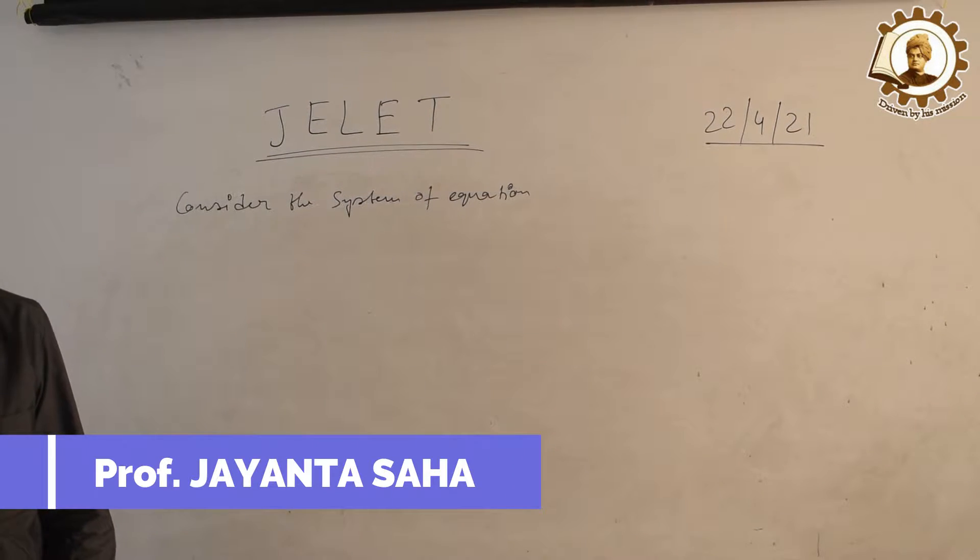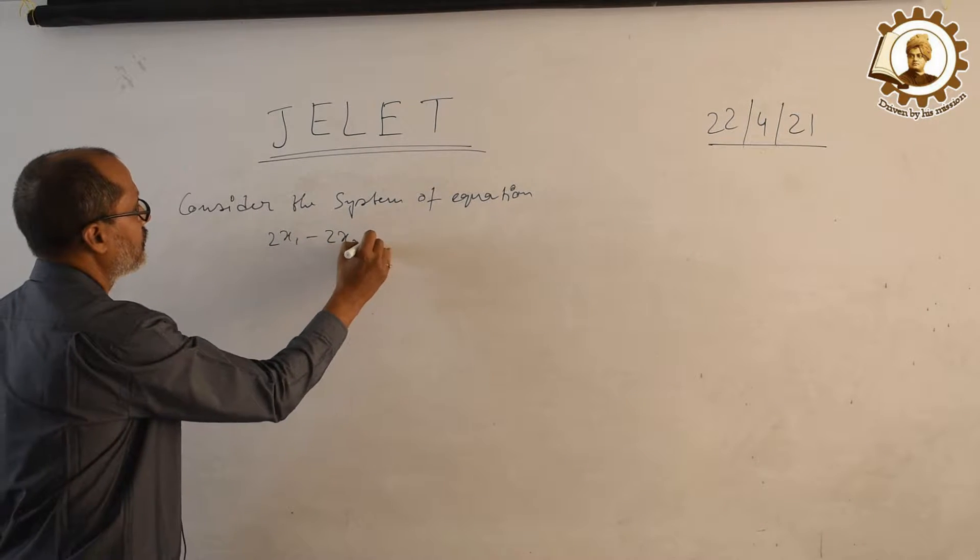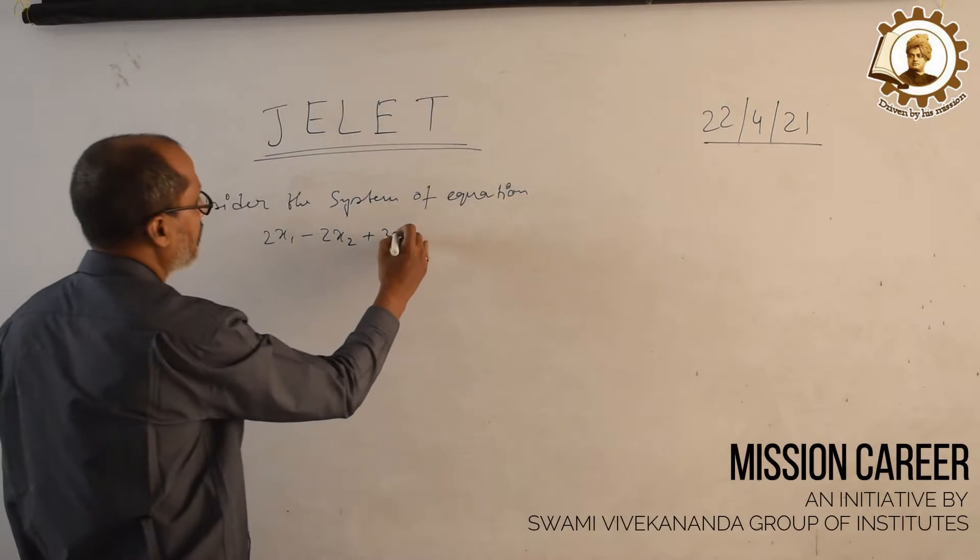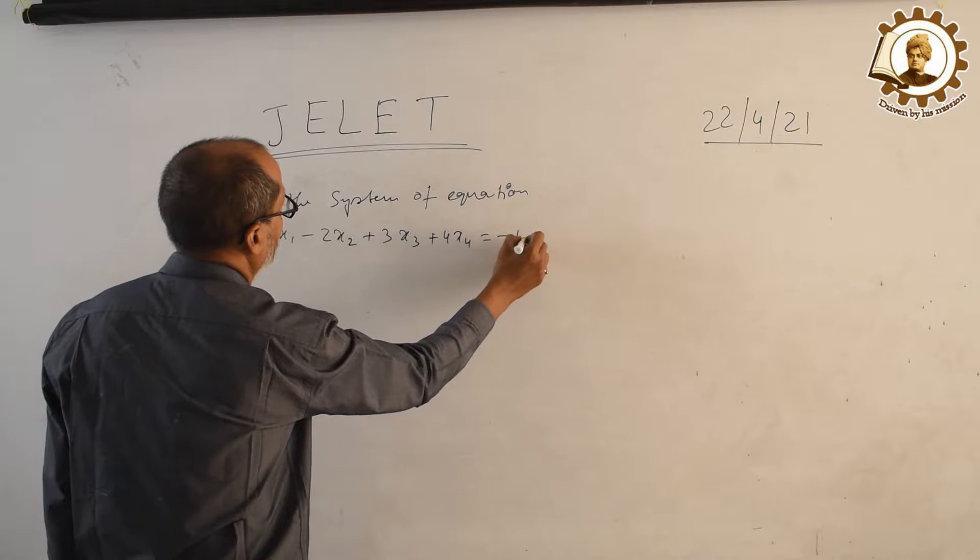2x1 minus 2x2 plus 3x3 plus 4x4 equals minus 18.